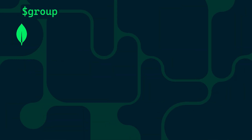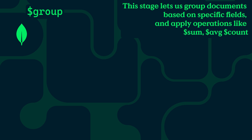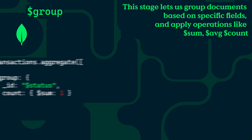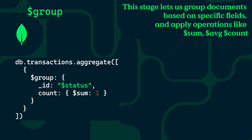And next we have dollar group. This stage lets us group documents by a specific field and apply operations like sum, average, or count within each group. For example, in our transactions collection, we could group by the status field and count how many transactions fall into each status.